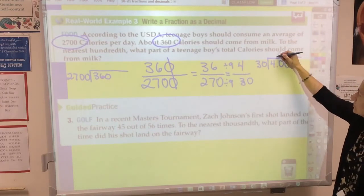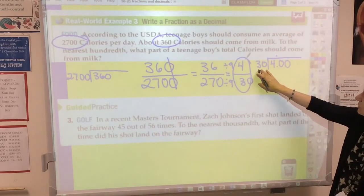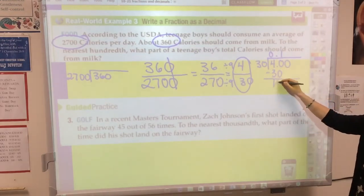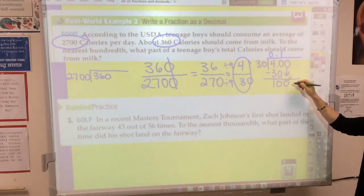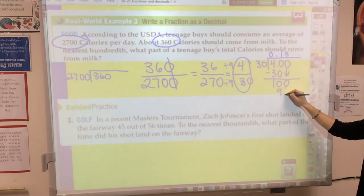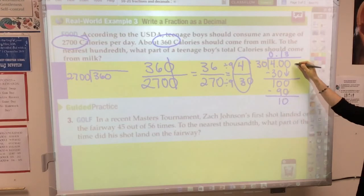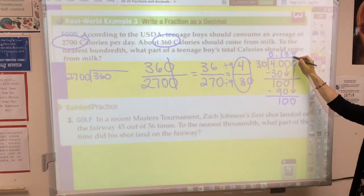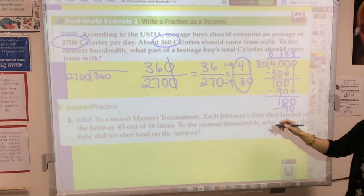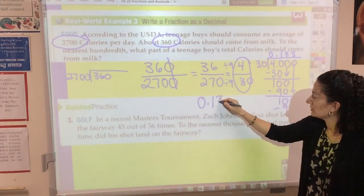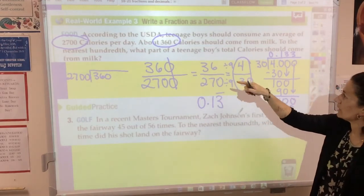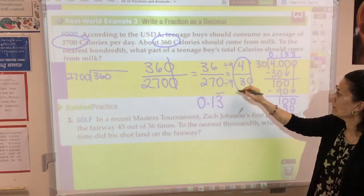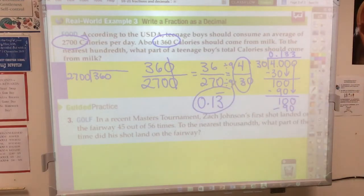Now I only have to divide 4 by 30 instead of 360 by 2,700. Now I can convert this fraction to a decimal. 30 doesn't go into 4. 30 goes into 40 one time, remainder 10. Bring down the zero. 30 goes into 100 three times, 3 times 30 is 90, remainder 10. And look what's happening here, I'm going to get a repeating decimal. 30 is going to go into 100 three times again with a remainder of 10. So it looks like it's 0.13 repetitive. The teenage boy's total calories should come from milk is about 0.13 or 4/30 of their total calories.